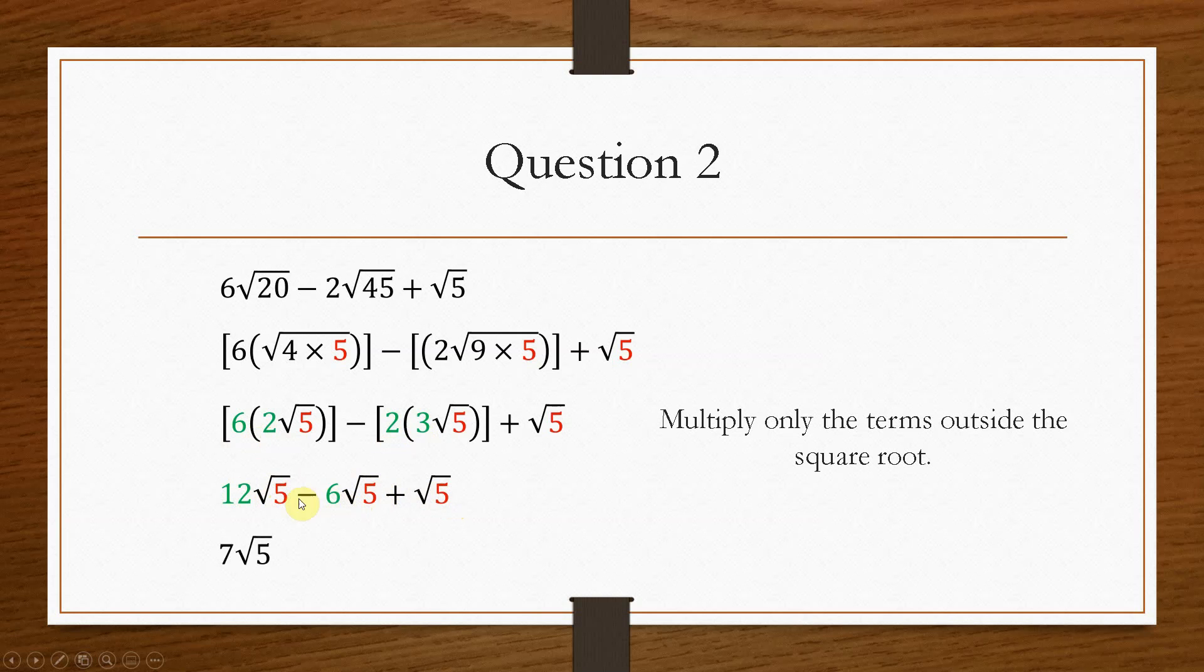So now we have the same value under each of the three terms for the square root sign. So that means we simply add the numbers outside together. So we did 12 minus 6, 6 plus, now there's a 1 here, so that'd be plus 1, so we get 7 root 5.